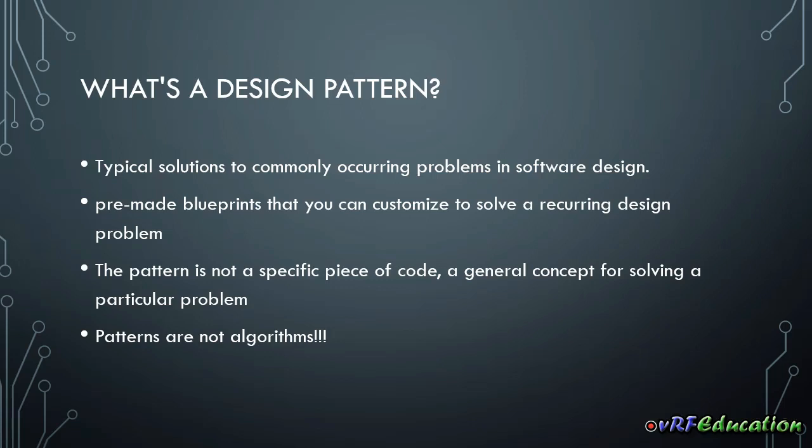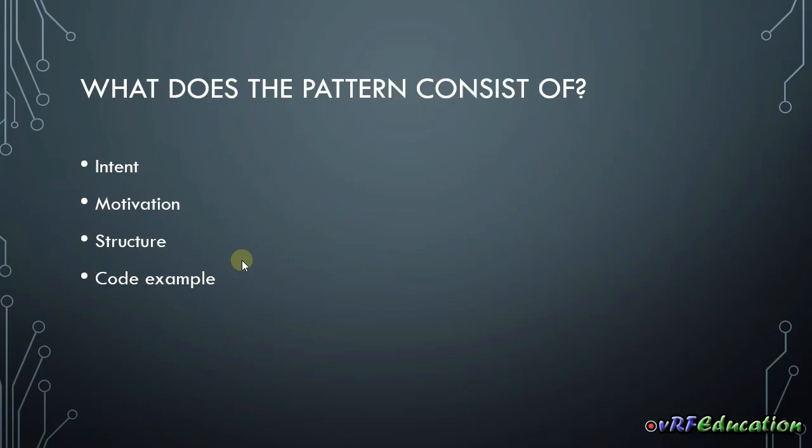A cooking recipe is somewhat like an algorithm — you follow clear steps to achieve a goal. For patterns it's more like a blueprint: you can see what the result and its features are, but the exact order of implementation is up to you.